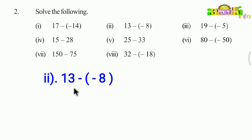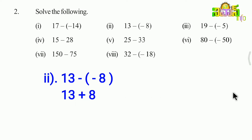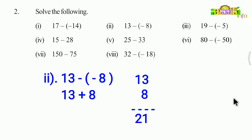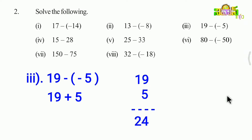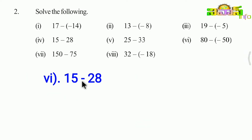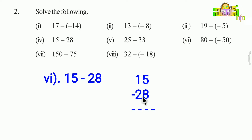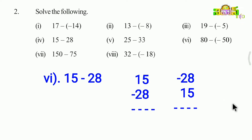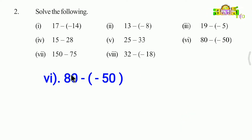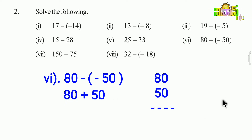The second problem is 13 minus minus 18. Minus times minus is plus, so we add 13 plus 18. 13 plus 8 is 21, so the answer is 31. The next problem is 15 minus 28 — only a single symbol. When you subtract a bigger number from a smaller one, take the big number first and subtract. The next problem is 80 minus minus 50. Minus times minus is plus, so we add 80 and 50. The answer is 130.